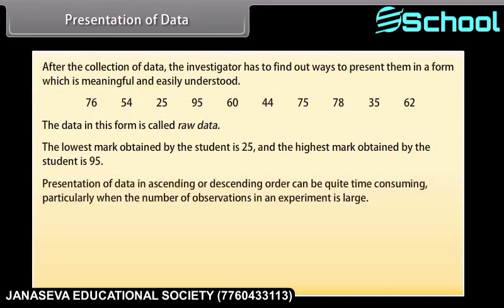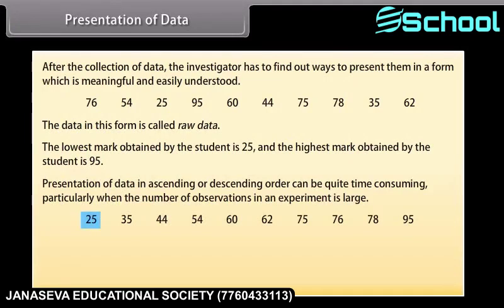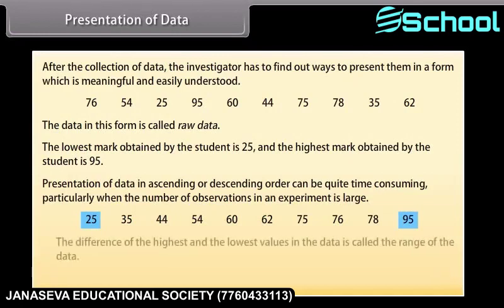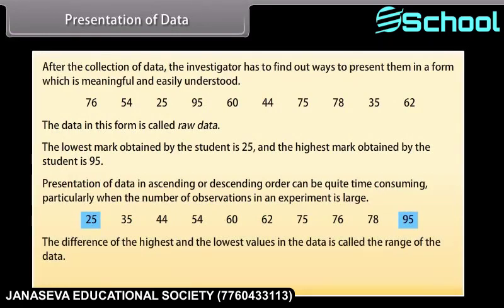Presentation of data in ascending or descending order can be quite time consuming, particularly when the number of observations is large. In ascending order, we can clearly see that the lowest marks are 25 and the highest marks are 95. The difference of the highest and the lowest values in the data is called the range of the data. So the range in this case is 95 minus 25, which is equal to 70.